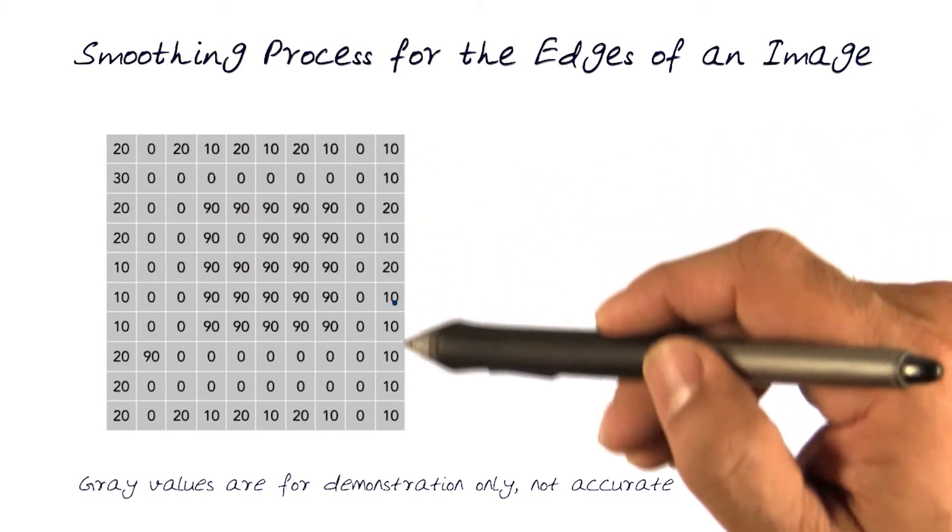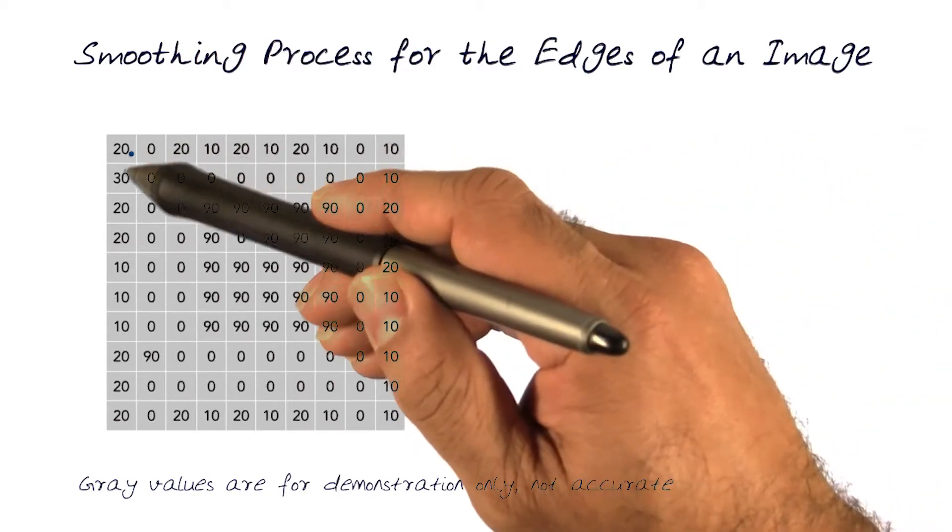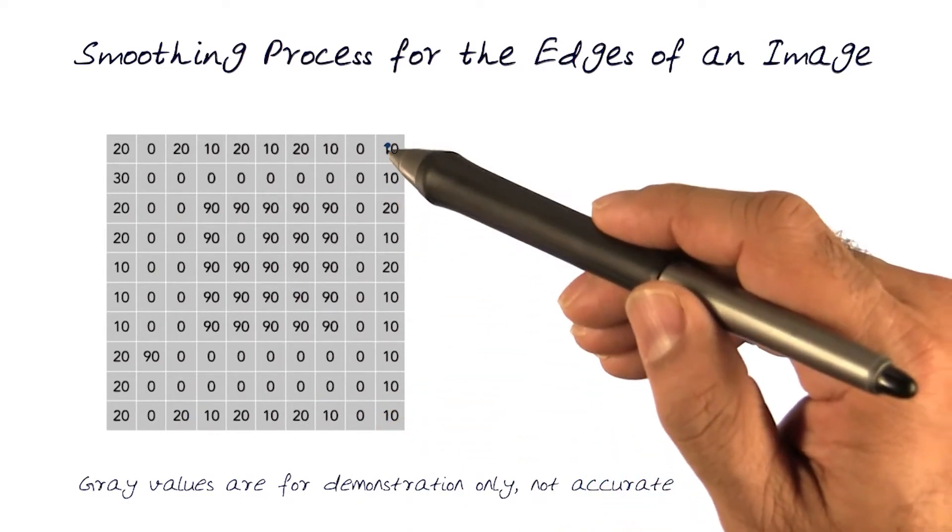Again, the same image, except that this time around I've replaced the zeros with some numeric values, again just to help us see what would happen.